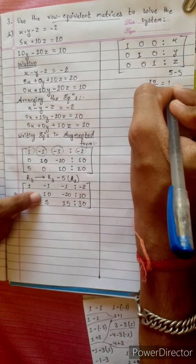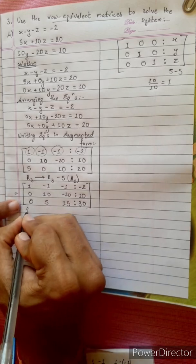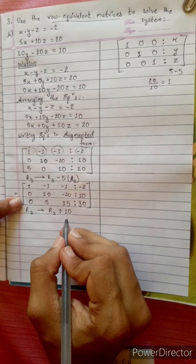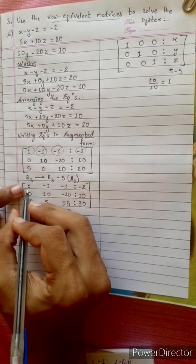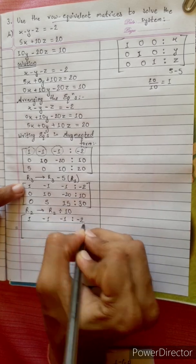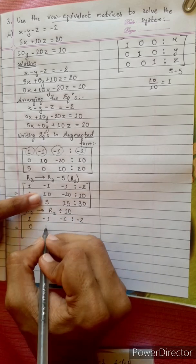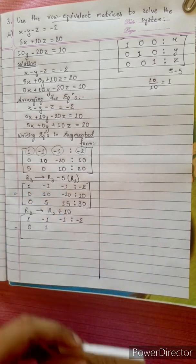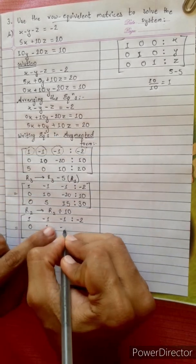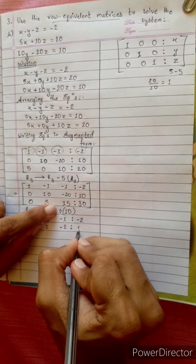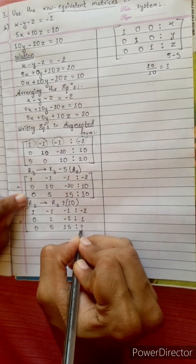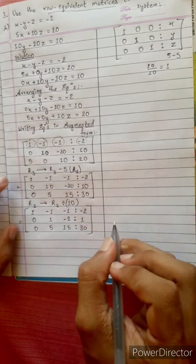Now we need to get a leading 1 in row 2. Change the second row: R2 divided by 10. 10 divided by 10 equals 1. The new R2 is: 0 divided by 10 equals 0; 10 divided by 10 equals 1; minus 20 divided by 10 equals minus 2; and 10 divided by 10 equals 1. So new R2 is [0, 1, -2 | 1]. Row 3 remains [5, 15, 30].